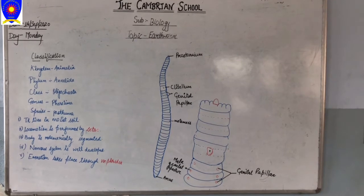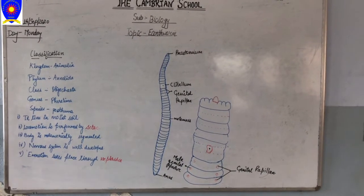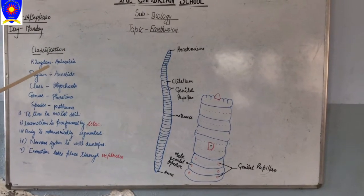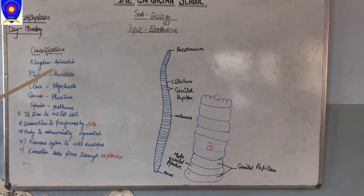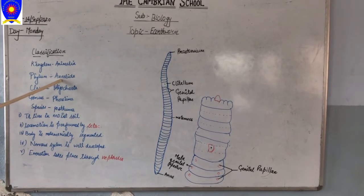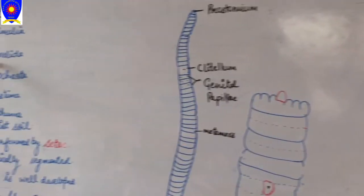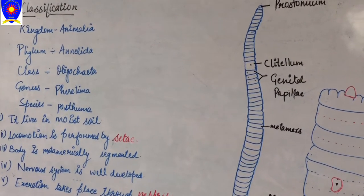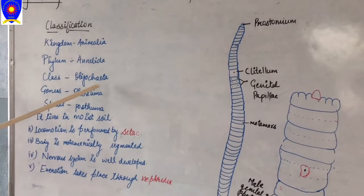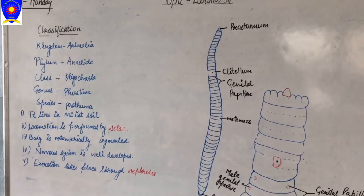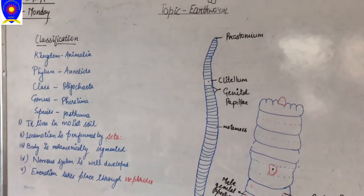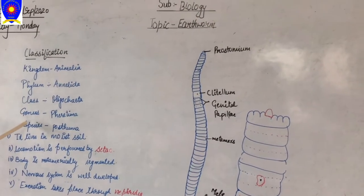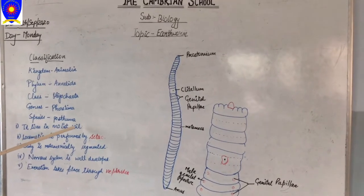Now I will explain the classification. Pheretima posthuma, or the earthworm, belongs to Kingdom Animalia, Phylum Annelida. If you have studied Annelida, you must have seen that all organisms of Annelida have a segmented body. Class Oligochaeta — because they move with the help of a locomotory organ called setae, that is why they belong to Class Oligochaeta — Genus Pheretima, and Species posthuma.